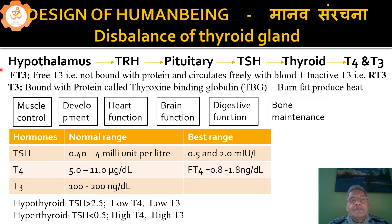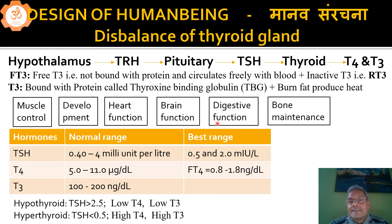In this way, thyroid hormones are the most active hormones. They affect our muscle control, development, heart function, brain function, digestive functions, and bone maintenance. So this is the most important hormone, controlling everything in the body.